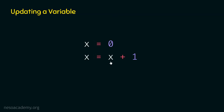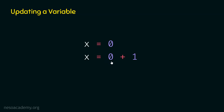Here, we are adding one to x. We are fetching the old value of x, which will be replaced by zero, because x is zero. So here we are fetching the old value of x — therefore this becomes zero. Zero plus one is one, and because of the assignment operator, one is assigned to x. This means that x is now one. This is the new value of x. In this way, we can update a variable.